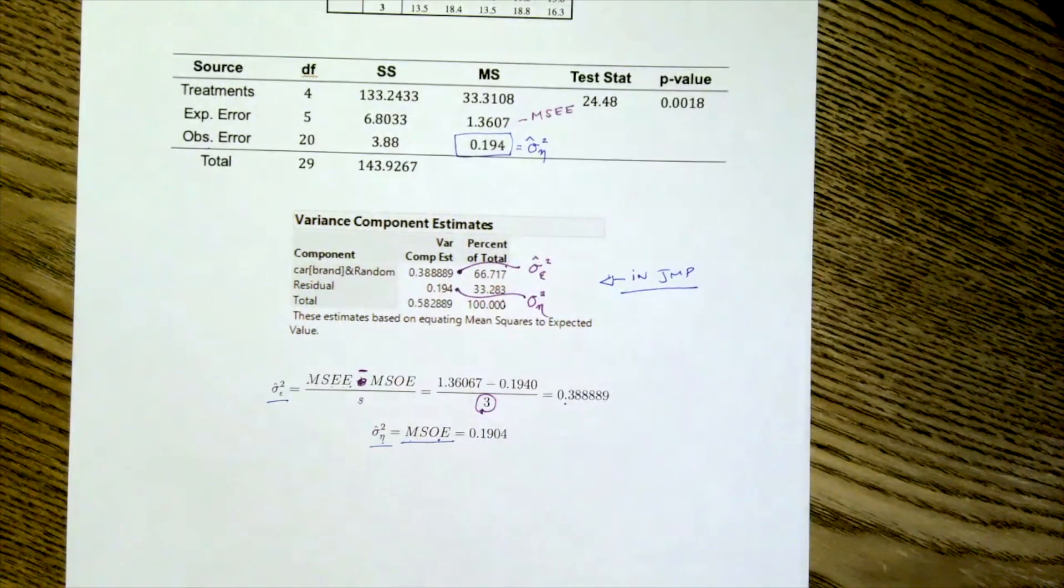So, boom! Again, this is the advantage of doing subsampling. We are now able to estimate the experimental unit variability and the observational unit variability. And this could be a reason why you want to do a subsampling design.